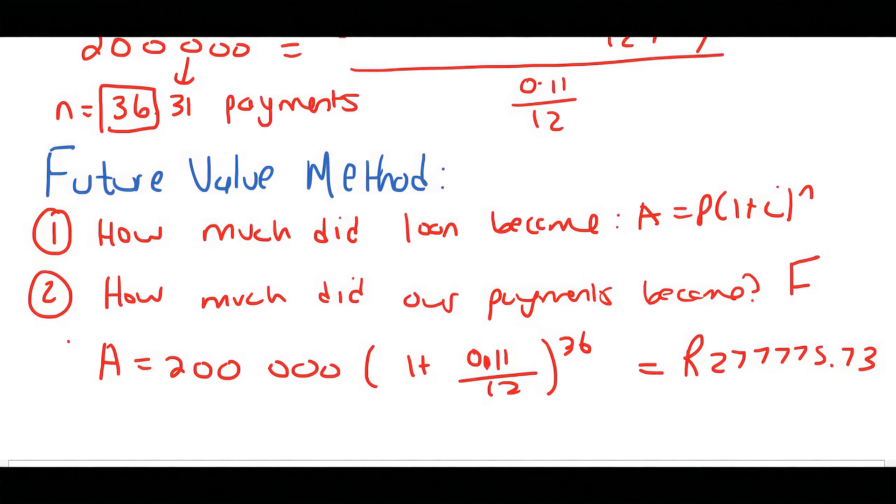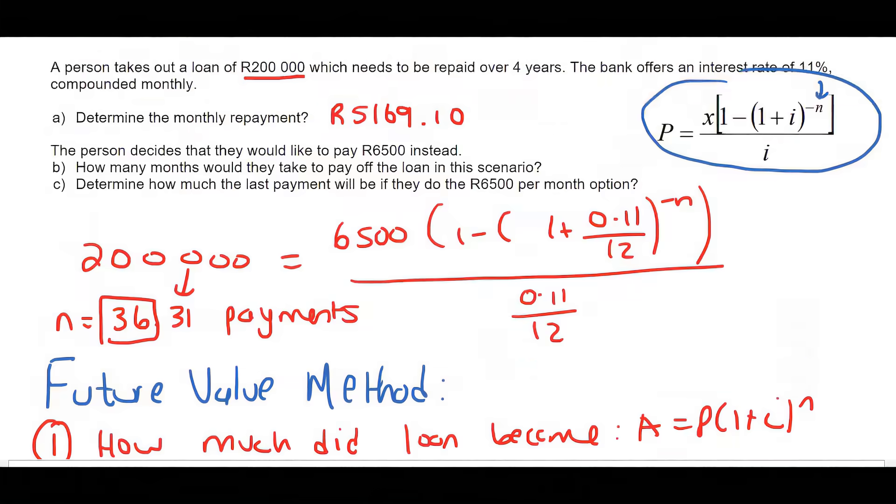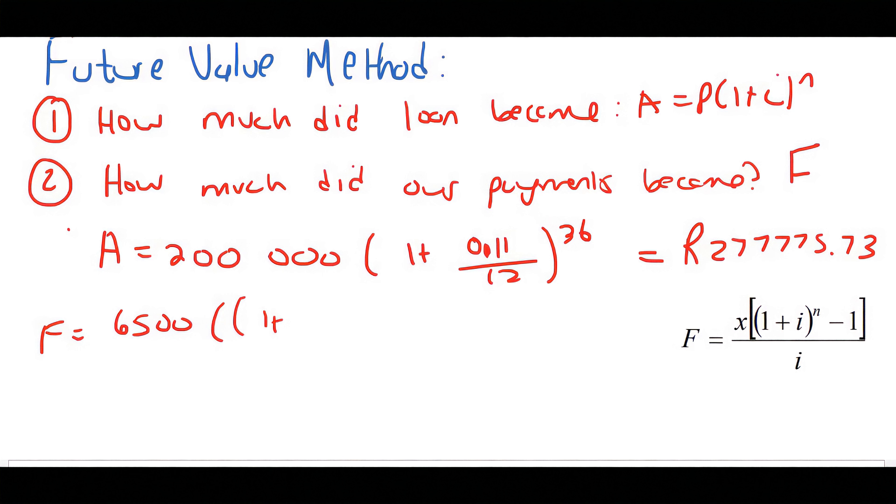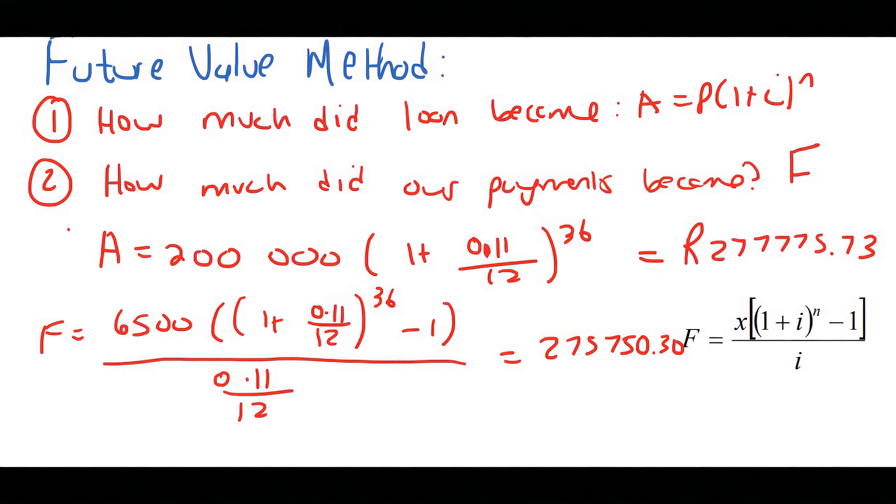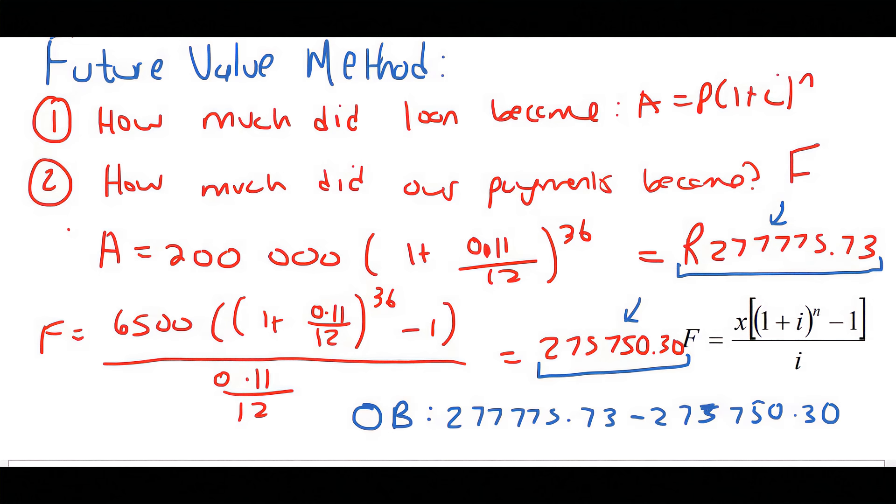Now we need to see how much did our payments become. We know that we've been paying back 6,500 Rand for 36 months. So using the future value formula: 6,500, the interest rate is 11% over 12, and we've been paying that for 36 months. If you type this in, you get 275,750.30. So immediately after our 36th payment, we have paid that amount to the bank and that is what the loan is worth. If we minus those two, we will get our balance outstanding. I'm going to get that by subtracting these two values, and we get 2,025 Rand and 43 cents. That amount of money is how much you owe the bank immediately after the 36th payment.